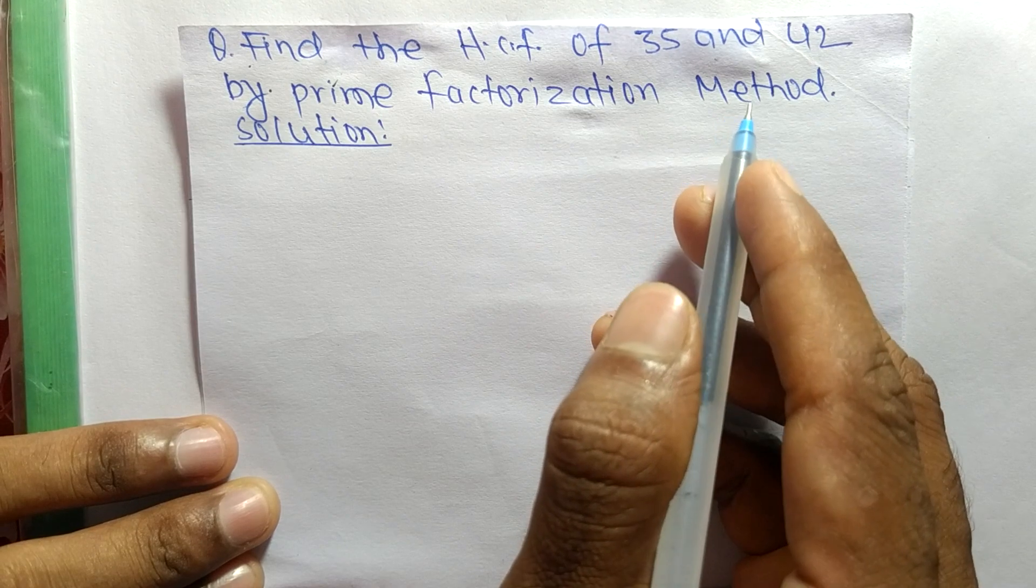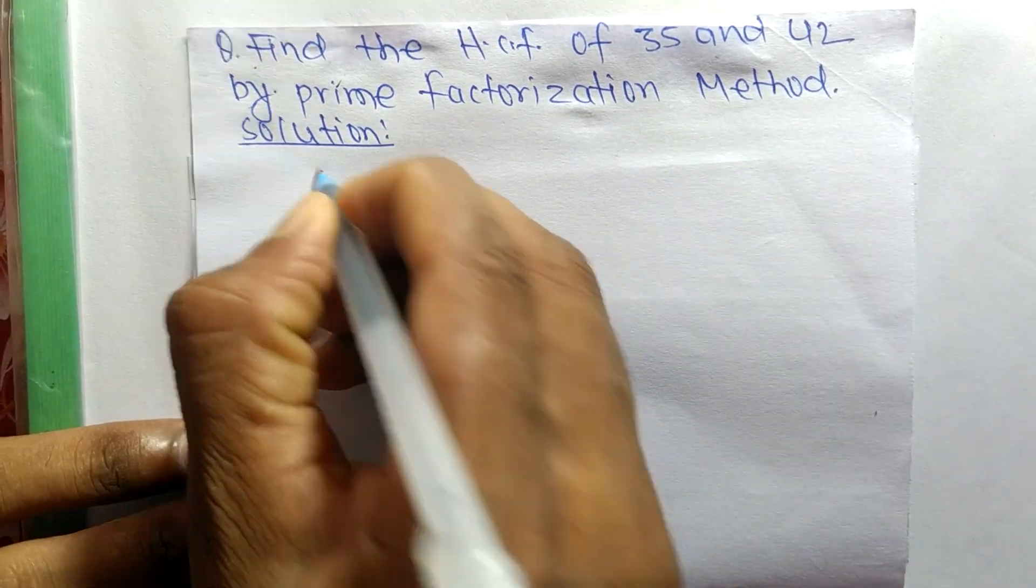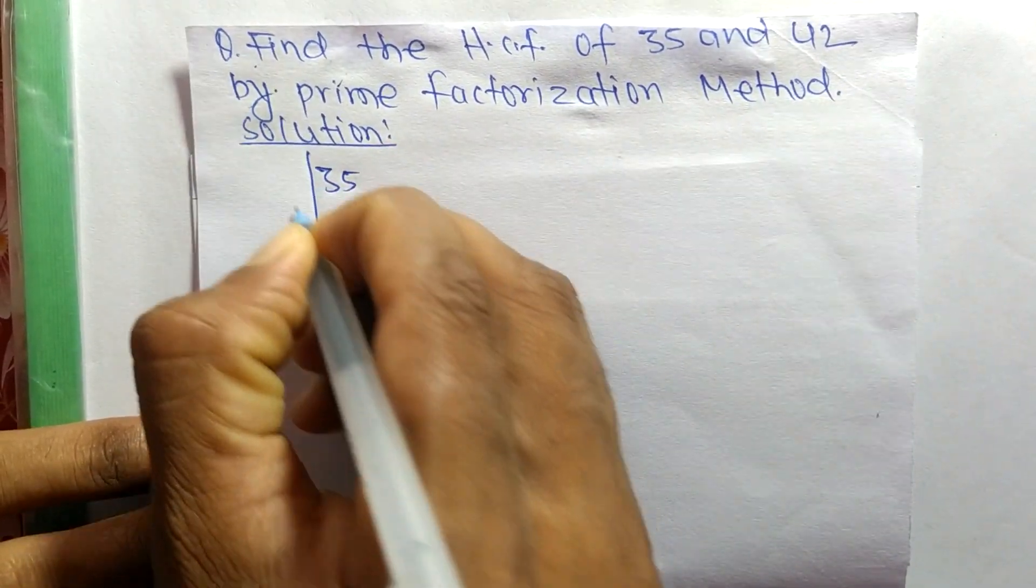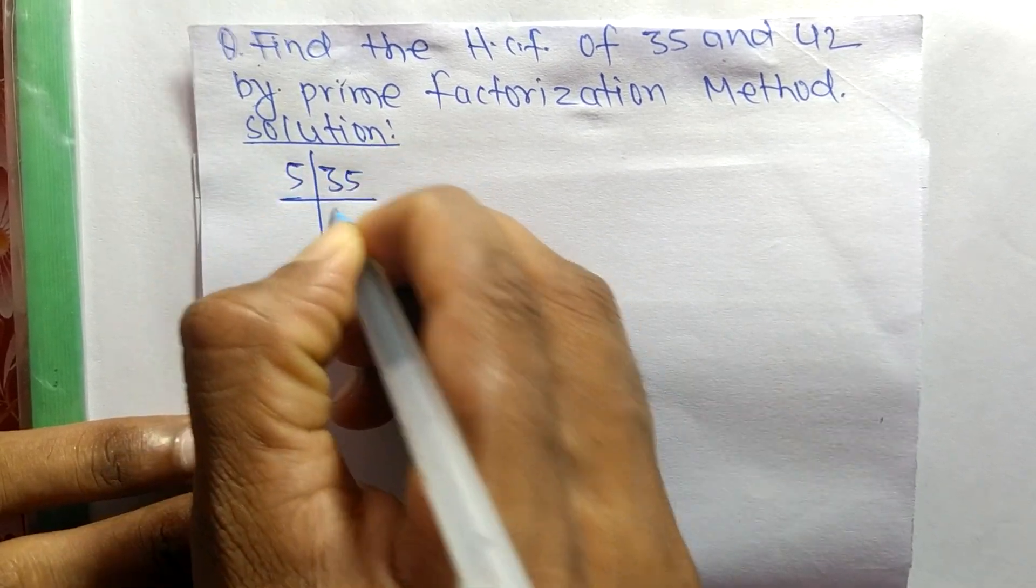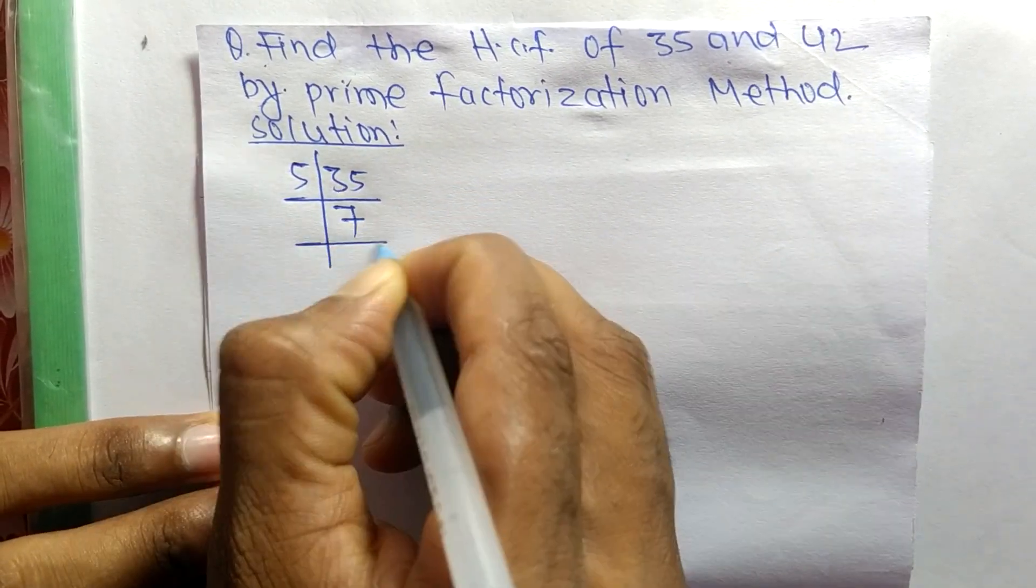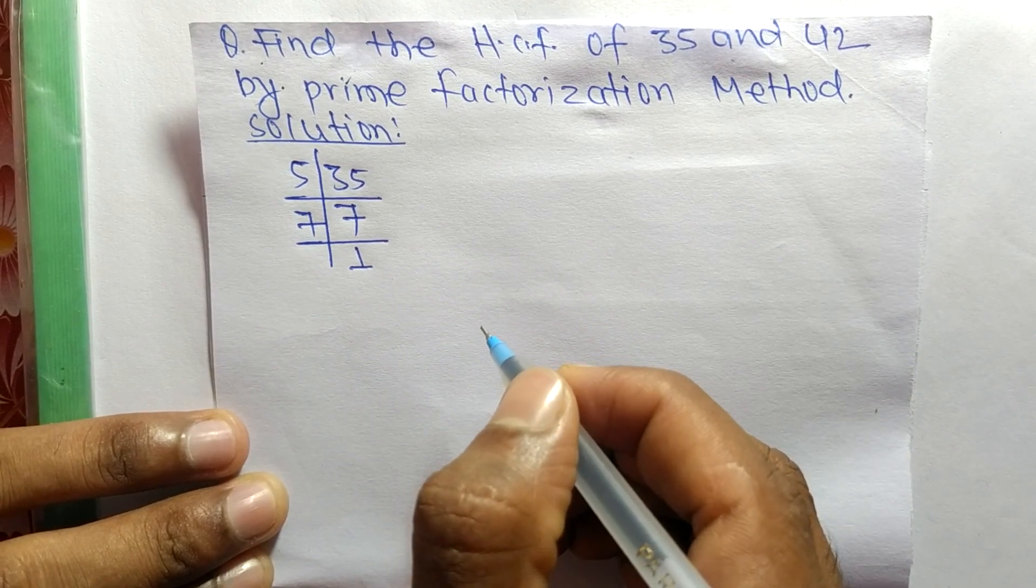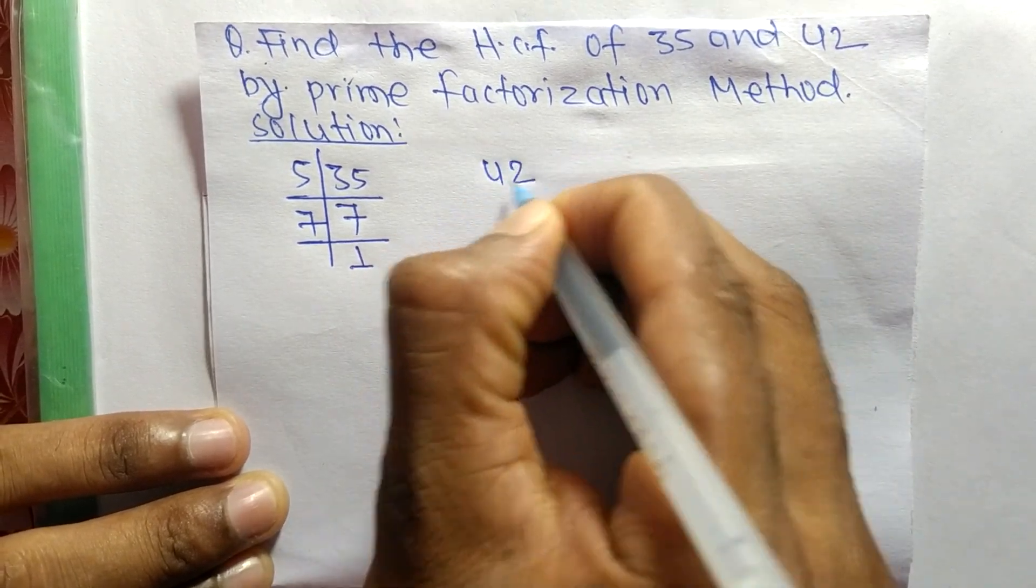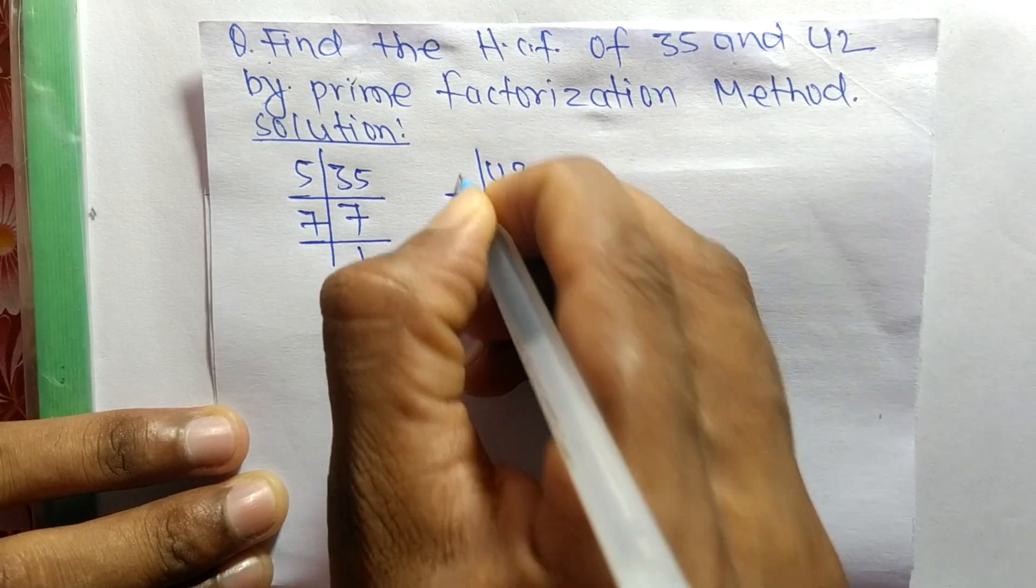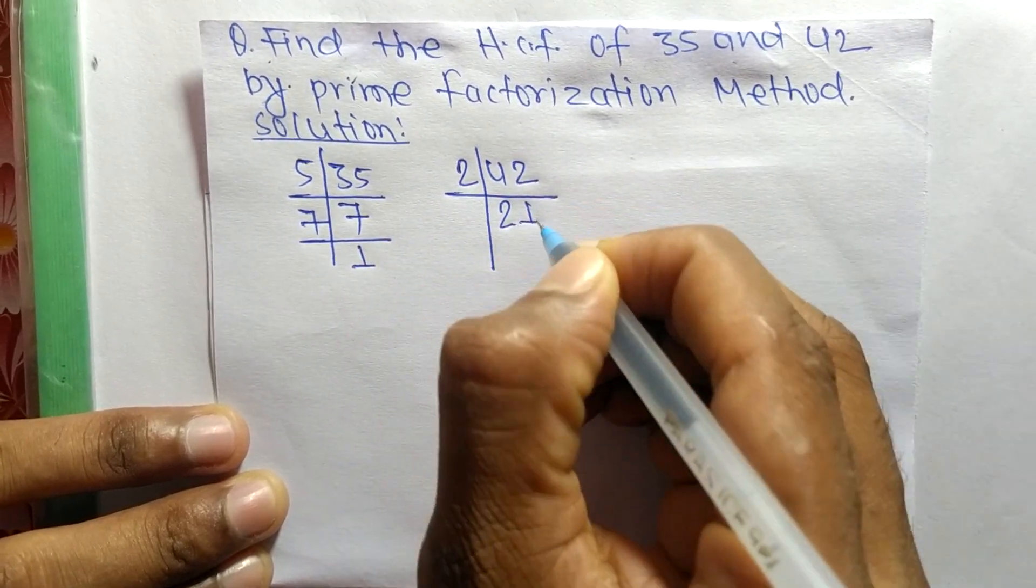First, find out the prime factors of 35. It is 5 times 7 equals 35, and 7 times 1 equals 7. Likewise, the prime factors of 42 are 2 times 21 equals 42.